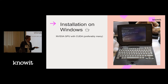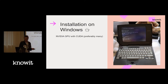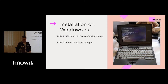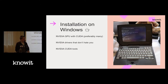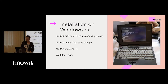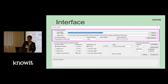Preferably — not mandatory but it will speed up the process — you want a GPU. It's exponentially faster to use a GPU than a CPU. For Windows, you want an NVIDIA GPU with as many CUDA cores as possible, preferably at least from the GTX 10-series generation. You also need the right graphics driver and the NVIDIA CUDA tools, which enable running these computations. Then you need waifu2x and Caffe.